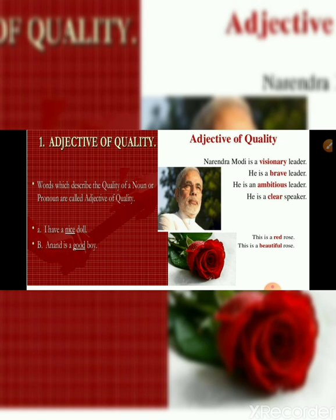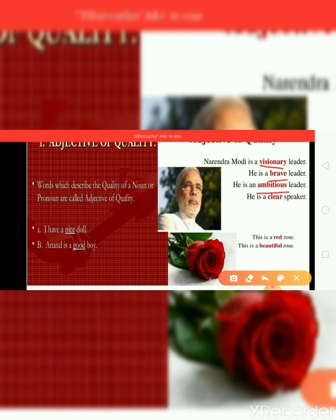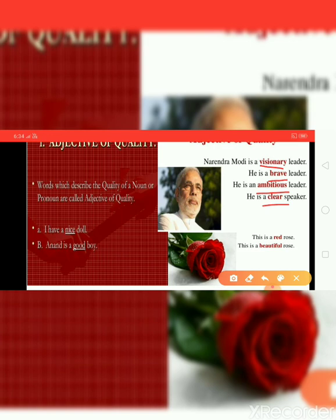The biggest example I am going to give you for adjective of quality: this is our respected Prime Minister Mr. Narendra Damodardas Modi. Narendra Damodardas Modi is a visionary leader — visionary is the adjective. He is a brave leader — adjective. He is an ambitious leader — adjective. He is a clear speaker — adjective. Also, below the picture: this is a red rose. Rose is the noun. Red is showing the quality of the rose — which kind of rose. This is a beautiful rose — also describing the quality of the noun. These are examples of adjective of quality.